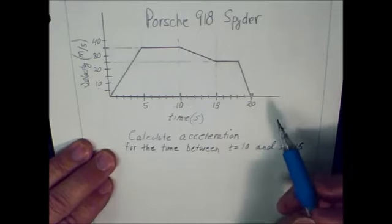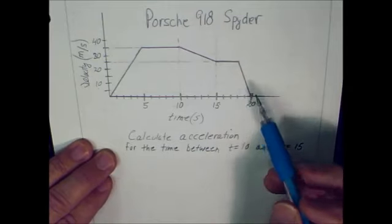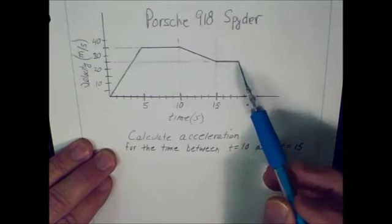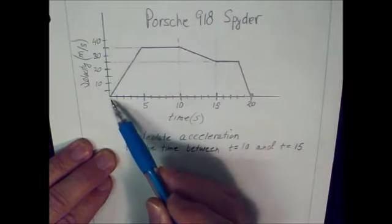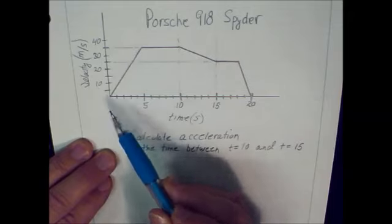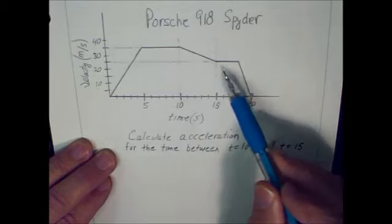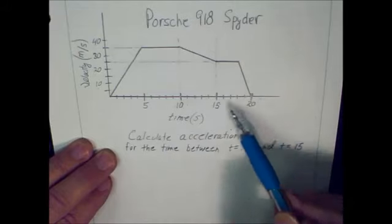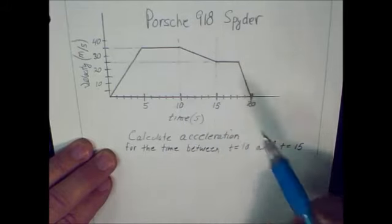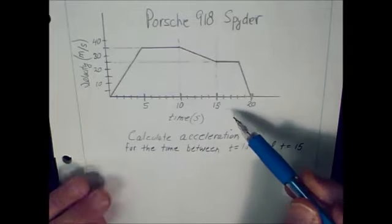You need to be able to calculate, not only calculate acceleration from a graph when the initial time is zero, but I want you to be able to calculate acceleration for any segment on this graph, regardless of when your initial time and when your final time is.